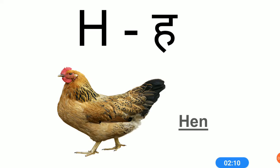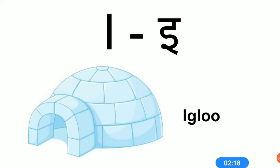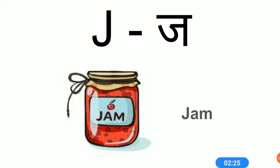H sound is H. H for hen. I sound is E. E for igloo. J sound is J. J for jam.